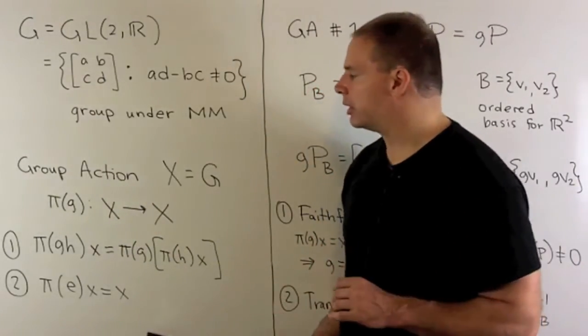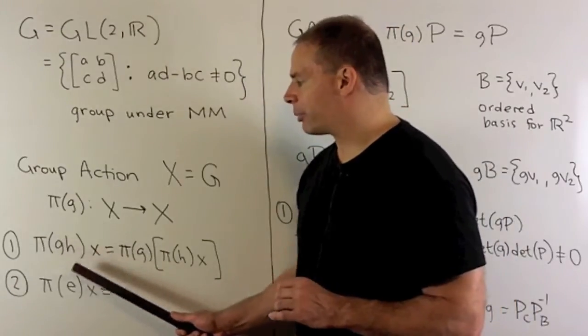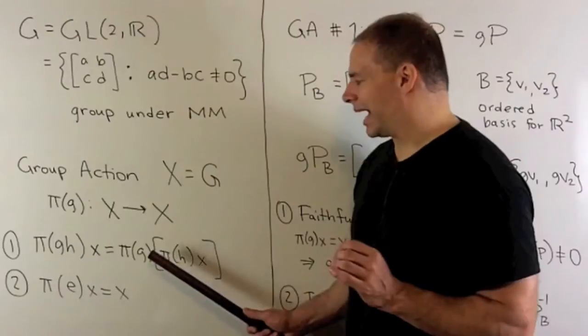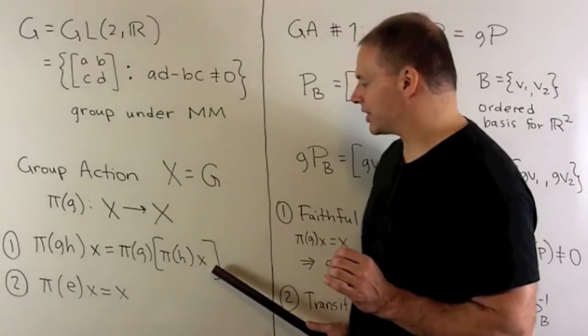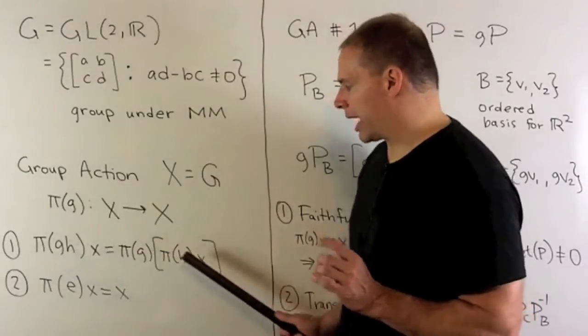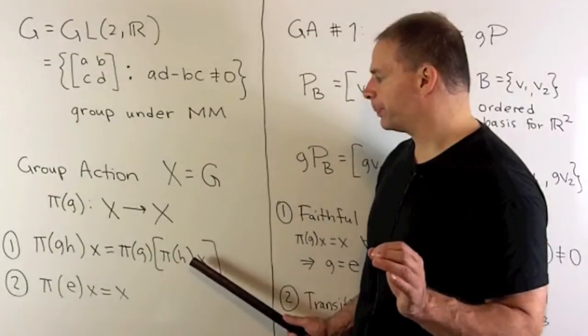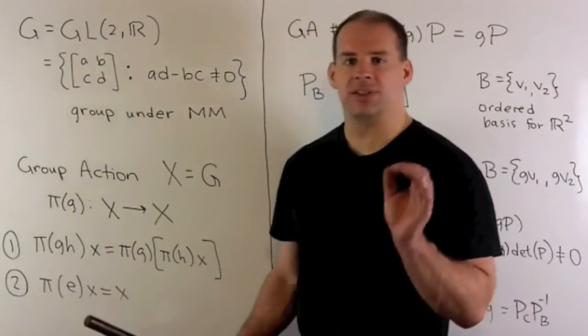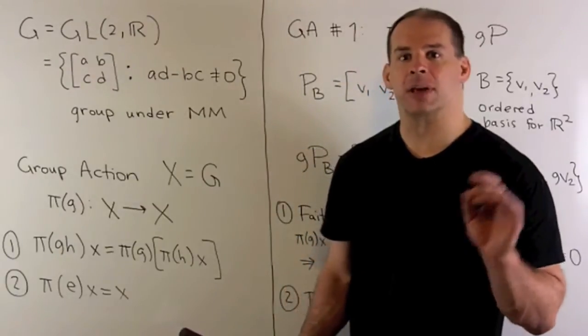Then we'll have two conditions. First, π of a product applied to X is going to be the same as if we apply π on each element separately, so it'll respect group multiplication. And we'll have that π on the identity element sends each element X back to itself.